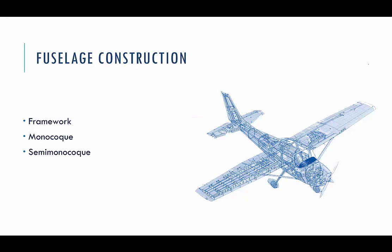Let's move to the fuselage. There are three main types of fuselage construction: framework, which is the oldest one, monocoque, and semi-monocoque — such as the fuselage of our Cessna 152. Let's move to the framework type of fuselage construction and see its pros and cons.